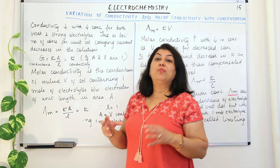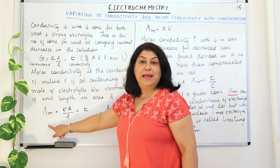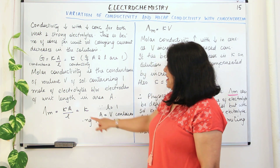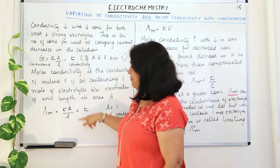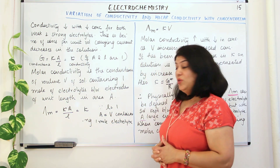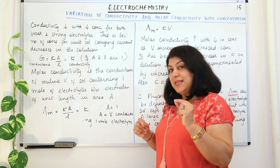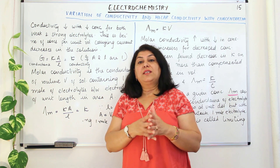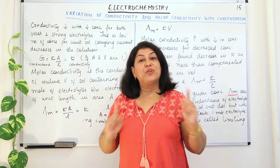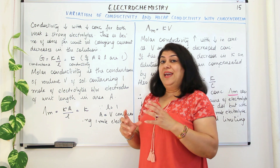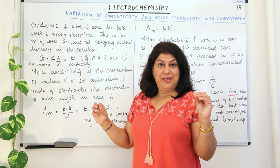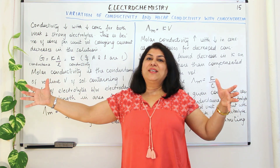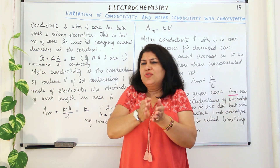Molar conductivity is represented by lambda m (λm). When we say molar conductivity, it means one mole of the solute is present in the solution. If the solution is dilute, one mole of solute will be present in a larger volume. If it is concentrated, one mole of the solute will be present in a smaller volume.